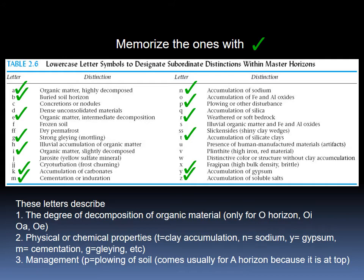Secondly, these letters can describe the physical or chemical properties or condition of a particular horizon. For example, T means accumulation of clay, N means accumulation of sodium, Y means accumulation of gypsum, and Z means accumulation of salt — all describing the chemical composition of the horizon. T, Y, and Z can come with any horizon. For example, BT is a B horizon with clay accumulation, CN is a C horizon with sodium accumulation, and CZ is a C horizon with salt accumulation.